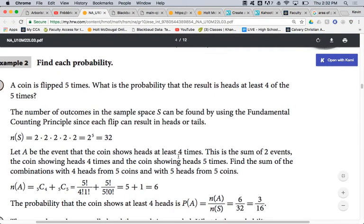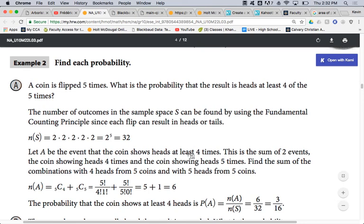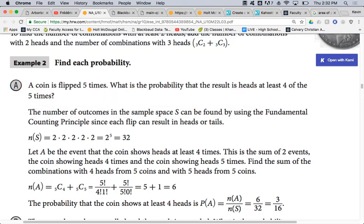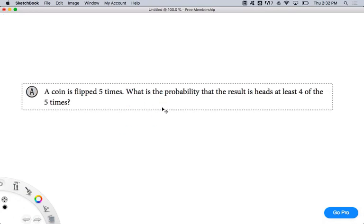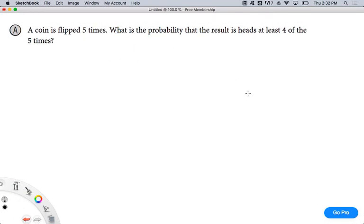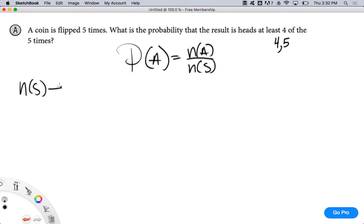Let's take a look at an example problem. A coin is flipped five times. What is the probability that the result is heads at least four of the five times? At least four of the five implies which numbers? Four and five. Does that make sense? Now, probability, I'm thinking PA equals NA over NS. Now, NS is what? Two to the fifth. I'm flipping a coin five times. Two, four, eight, sixteen, thirty-two. Bam.